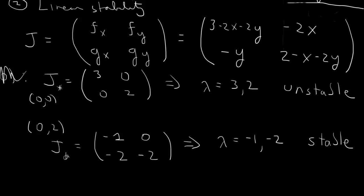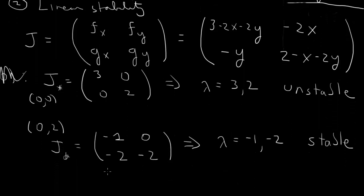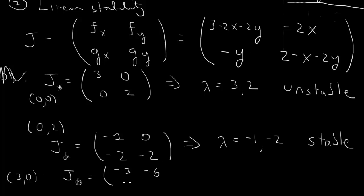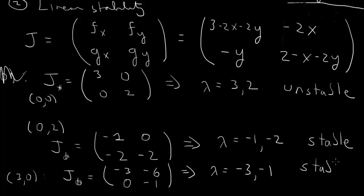At the fixed point (3, 0), with x equals 3 and y equals 0, the Jacobian is: first row (−3, −6), second row (0, −1). This is an upper triangular matrix, so the eigenvalues are again the diagonal elements: −3 and −1. Both are negative, so this fixed point is also stable.